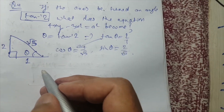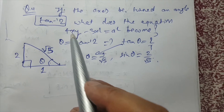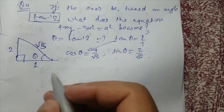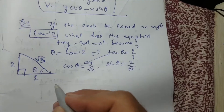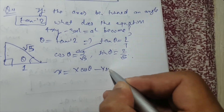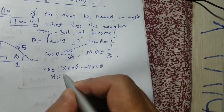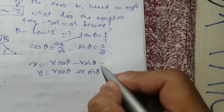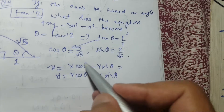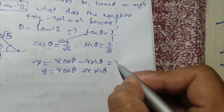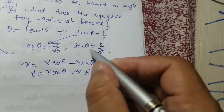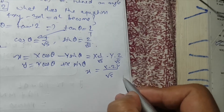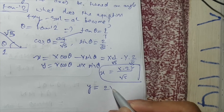Now we write small x and small y in terms of capital X and capital Y using our equations: x = X·cos θ − Y·sin θ and y = Y·cos θ + X·sin θ. Substituting cos θ = 1/√5 and sin θ = 2/√5, we get: small x = (X − 2Y)/√5 and small y = (2X + Y)/√5.